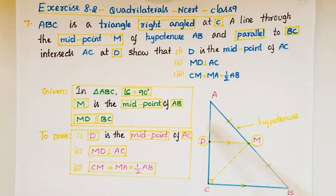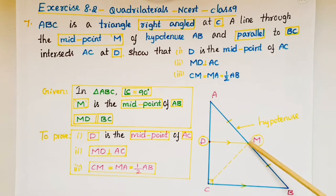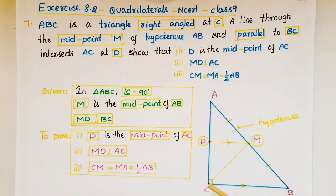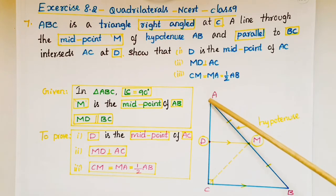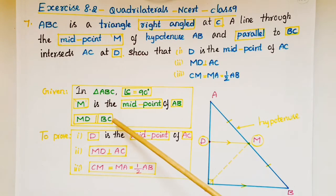Here in triangle ABC, AB is the hypotenuse. If you take the midpoint of side AB and draw a line through M which is parallel to BC, this line intersects AC at D. So here MD is parallel to BC.